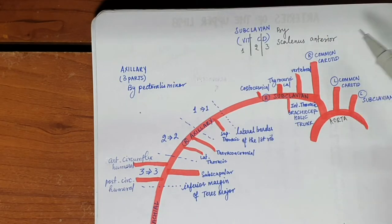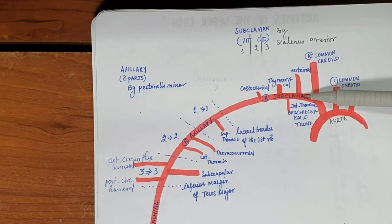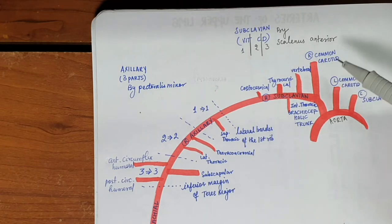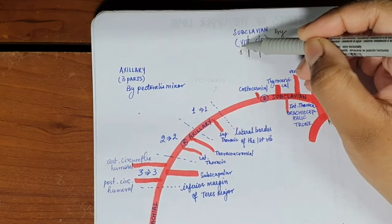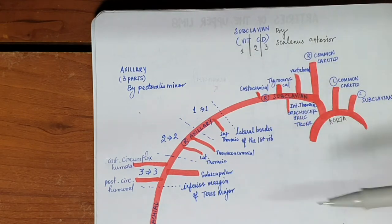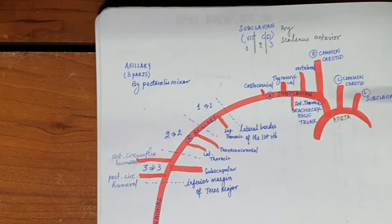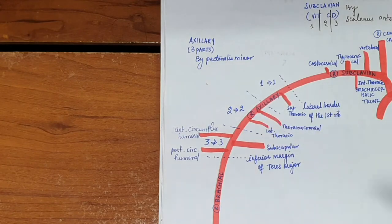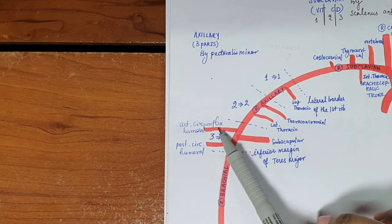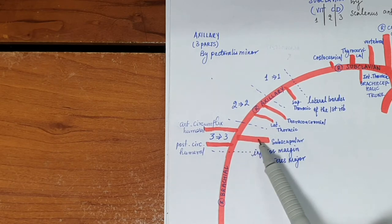The first part of the subclavian and the third part of the axillary artery form the scapular anastomosis. When we say the first part of the subclavian, we are referring to its branches — VIT: vertebral, internal thoracic, and thyrocervical trunk. When we say the third part of the axillary artery, that refers to the circumflex humeral vessels and the subscapular artery.